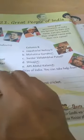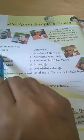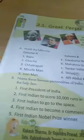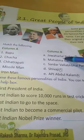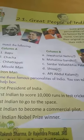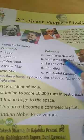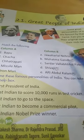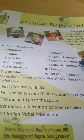Number 1: Bapu. Who is Bapu? Bapu is Mahatma Gandhi. You write number 1 for Mahatma Gandhi.